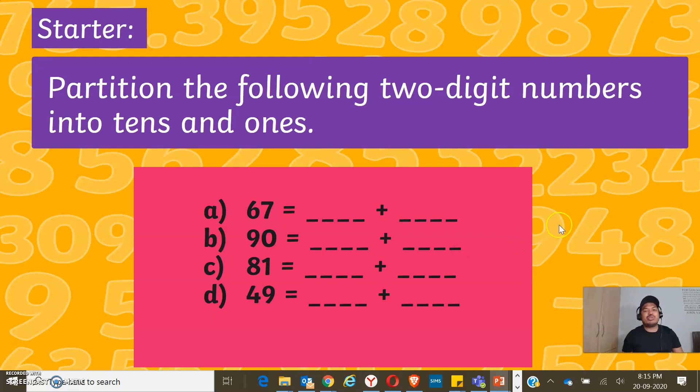Partition the following two-digit numbers into tens and ones, like 67. 67 is made up of 60 plus 7. Now it's your turn. Try to answer letter B, C, and D.